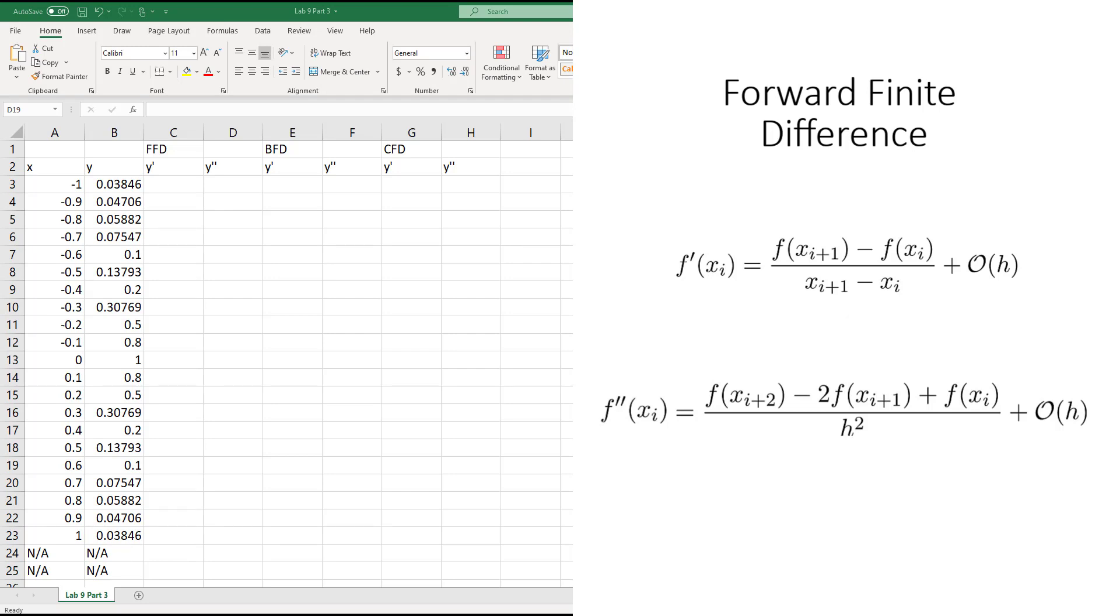I will now refer to the formulas to calculate our derivatives. We will first start with the first derivative using FFD, which is equal to the numerator f(x_i+1), which is B4, minus f(x_i), which is B3, divided by the denominator x_i+1, which is A4 minus A3. Hit enter, and then click and drag the corner.